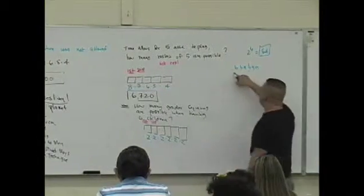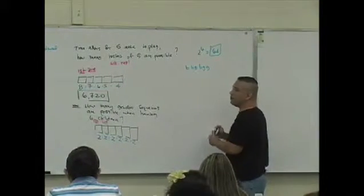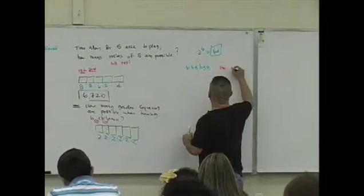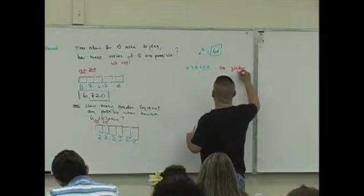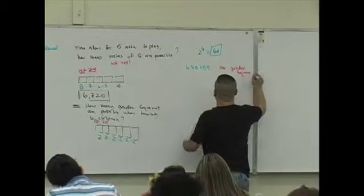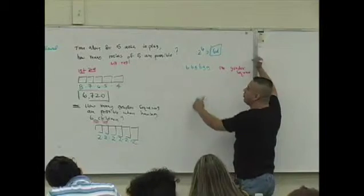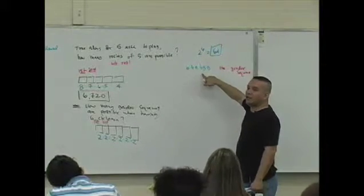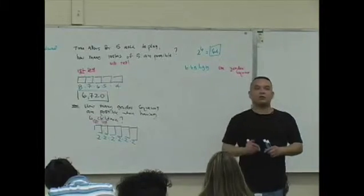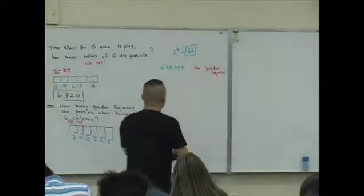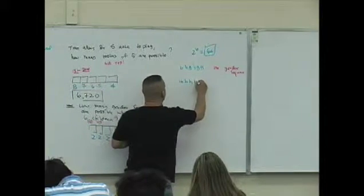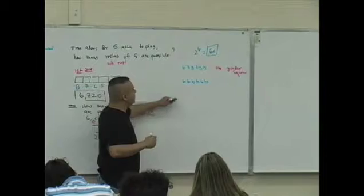Now I want to point out this to you. A gender sequence here can be B, B, G, B, G, G, 1, 2, 3, 4, 5, 6. This is counted as one gender sequence. This is one gender sequence. Meaning, your first child's a boy, second one's a boy, third is a girl, fourth is a boy, and then the last two are going to be girls. This is one gender sequence.